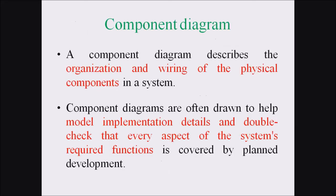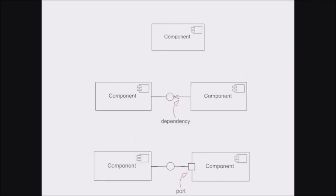In this lecture we discussed a Component Diagram. A Component Diagram describes the organization and wiring of the physical components in a system. Component Diagrams are often drawn to model implementation details and double check that every aspect of system requirement functions is covered by planned development. The different notations available in a component diagram are component, dependency, port, and interface.